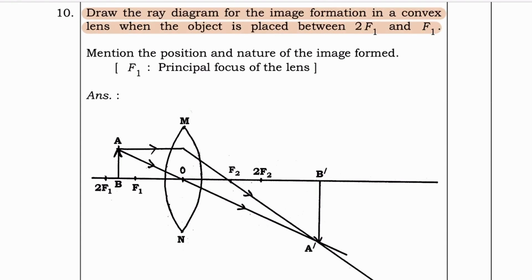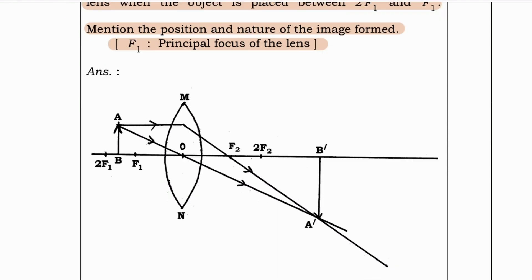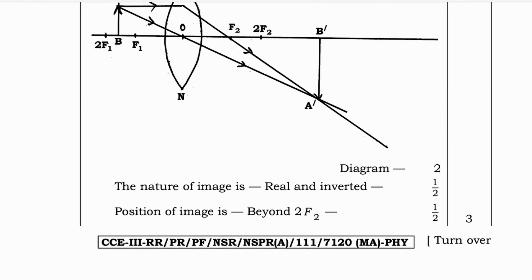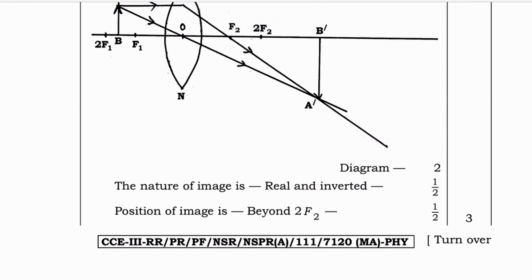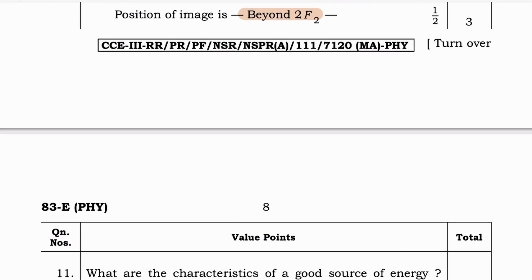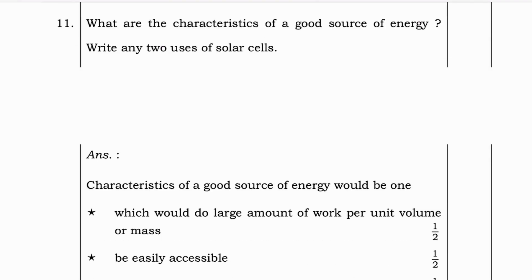Next question: Draw the ray diagram for image formation in a convex lens when the object is placed between 2f1 and f1. Mention the position and nature of the image formed. F1 is the principal focus of the lens. The nature of the image is real and inverted, and the position of the image is beyond f2.